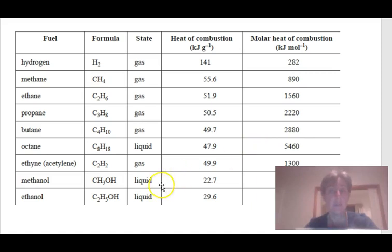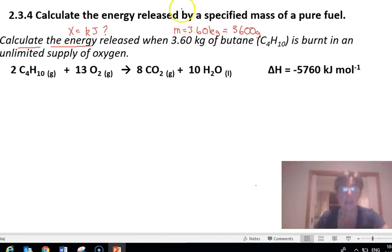You looked at the data booklet and you've got two thousand eight hundred and eighty, but when you come back here you realize that that two thousand eight hundred eighty is for one mole and you've got two moles. So you need to double it.